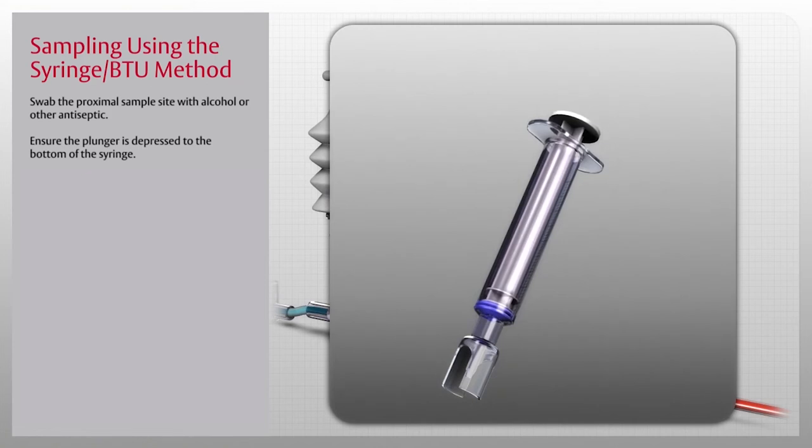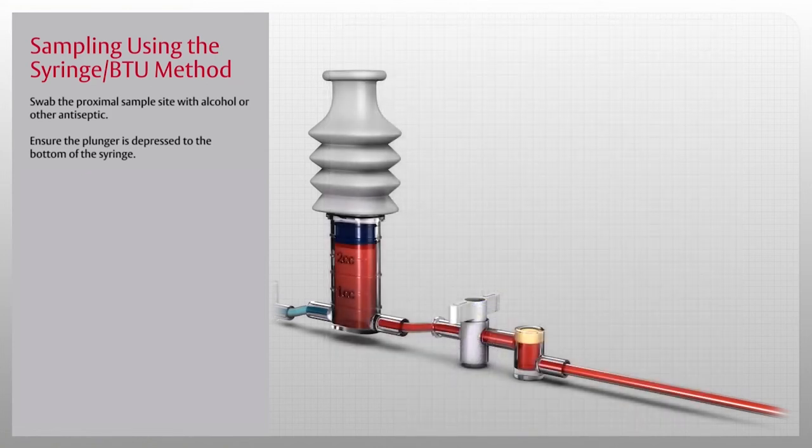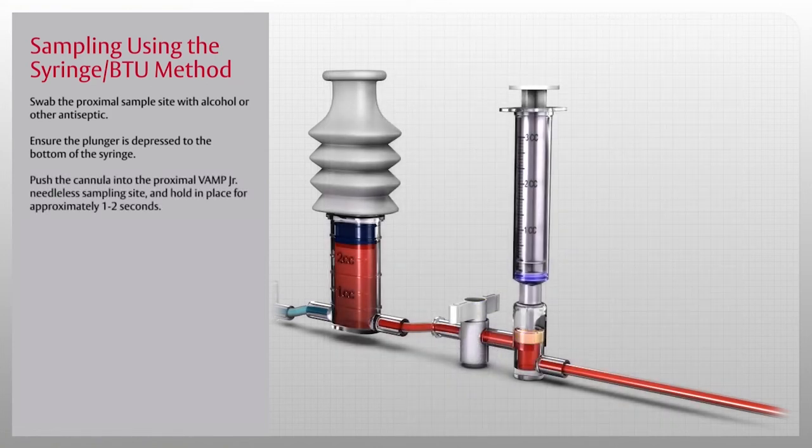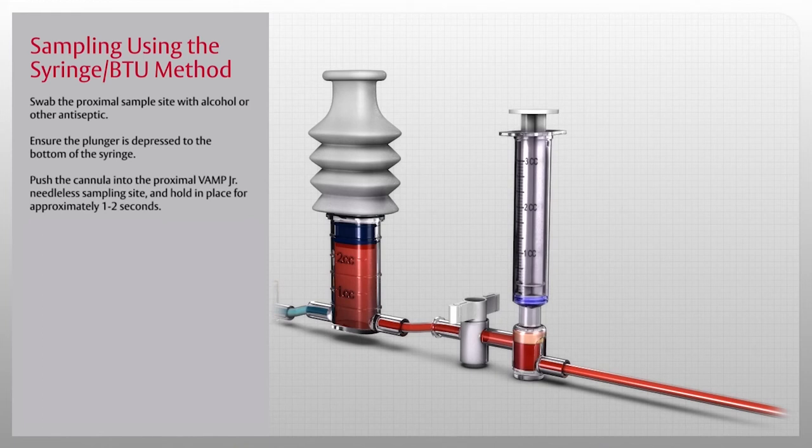Next, attach the cannula to the syringe. When it is attached, push the cannula into the proximal Vamp Junior needleless sampling site, and hold in place for approximately 1 to 2 seconds.